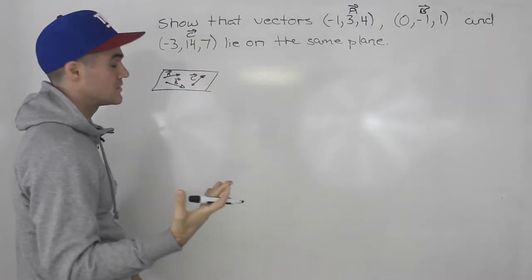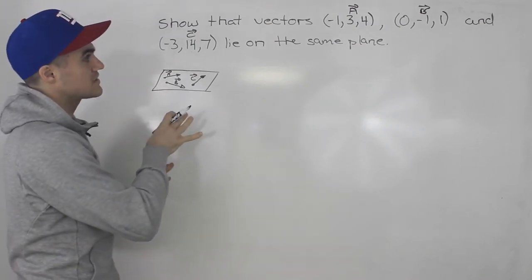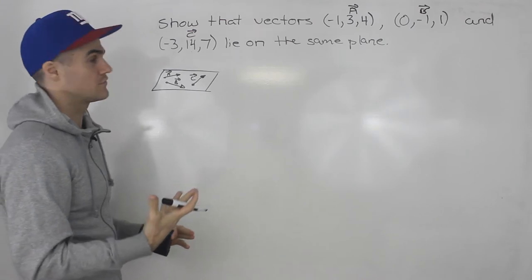And we went over how to do this in lecture videos. The way you do that is you want to show that one of the vectors can be written as a linear combination of the others.